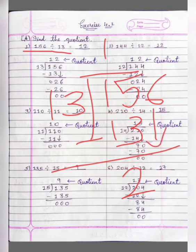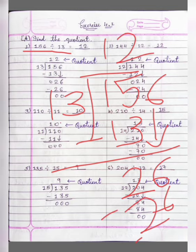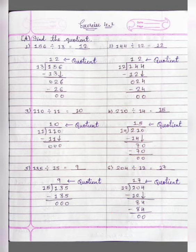Now we will bring down this 6 here, and 13 twos are 26. 26 minus 26 is equal to 0. So our quotient is 12. Quotient is equal to 12, so here we will write 12.